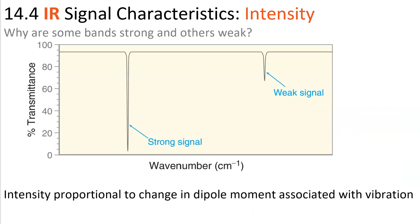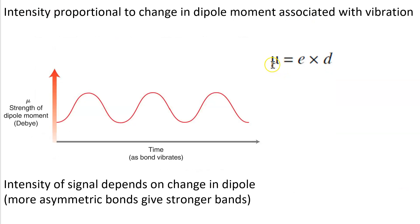The short answer is IR signal intensity is proportional to the change in dipole moment associated with the vibration. In other words, the bond polarity of the bond that is stretching. Mu is dipole moment, which corresponds to charge separation times the distance between the two charges.